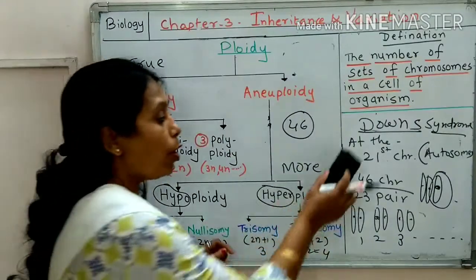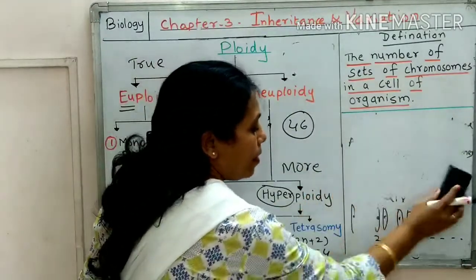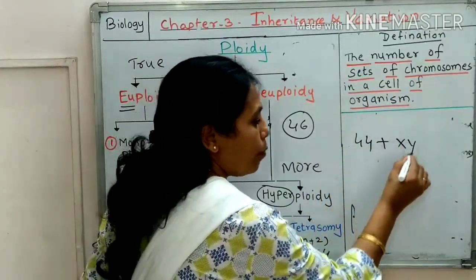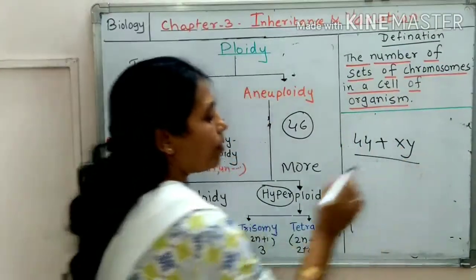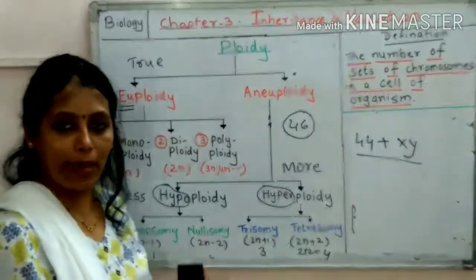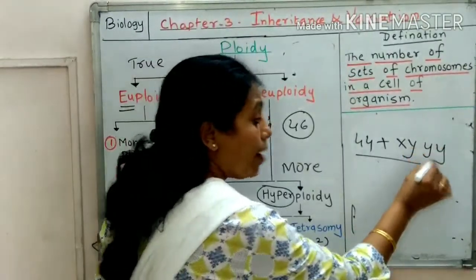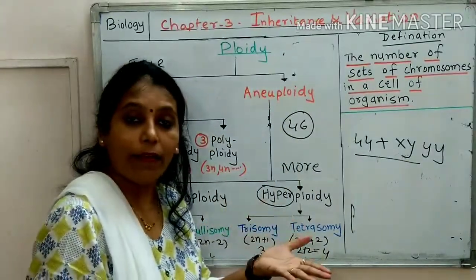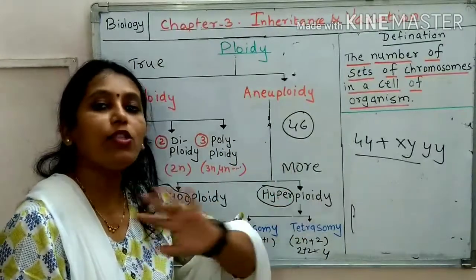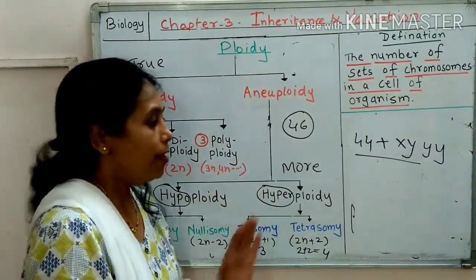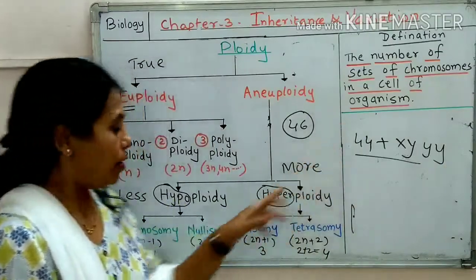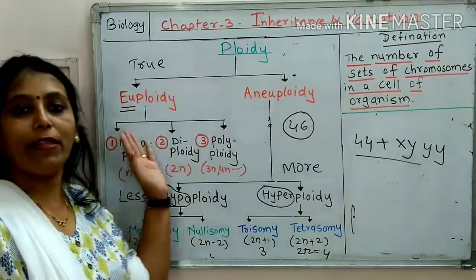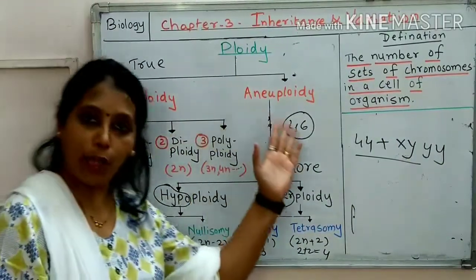Tetrasomy means 2 more chromosomes are present. Normally with 44 body chromosomes, suppose this is a normal male — if 2 extra Y chromosomes are present, then definitely it is not normal, because everything in excess is not normal. So this is also an abnormal condition. You will have to remember the definition and the types: euploidy and aneuploidy.